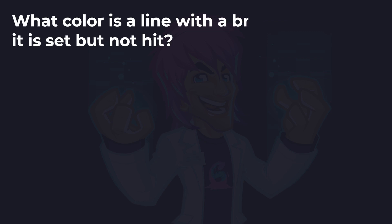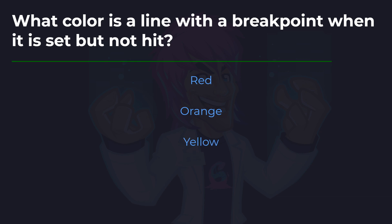What colour is a line with a breakpoint when it is set but not hit? So this is when we've added the breakpoint to the line. Is it red, orange, or yellow? Given the last answer, you should all get this one right. And the answer is, of course, red. When you first add a breakpoint to code, it turns red.